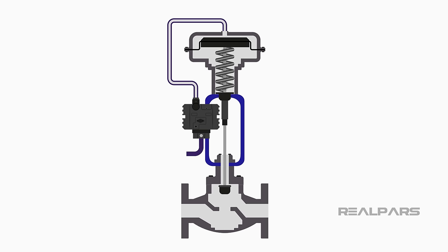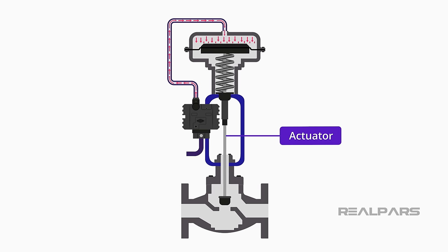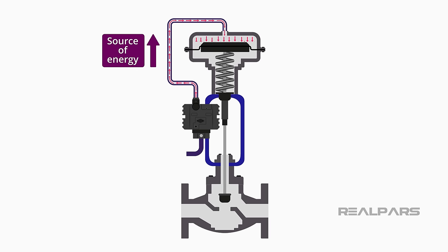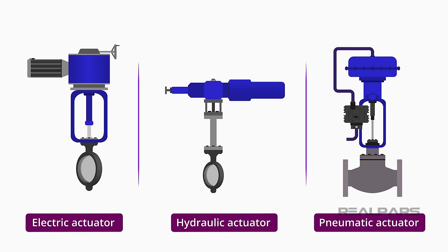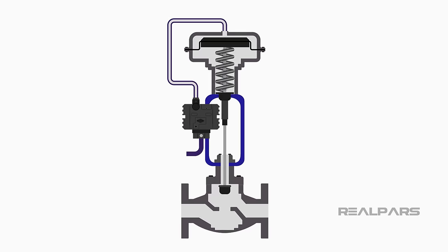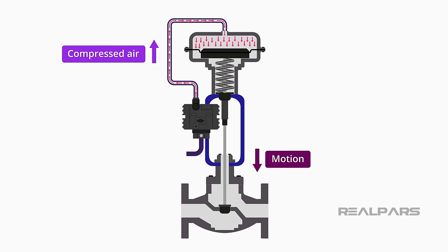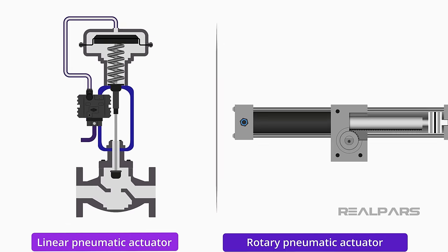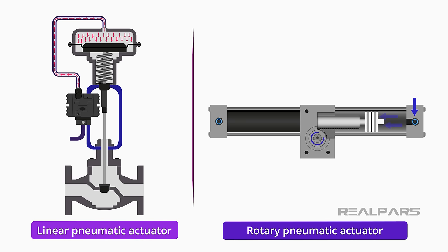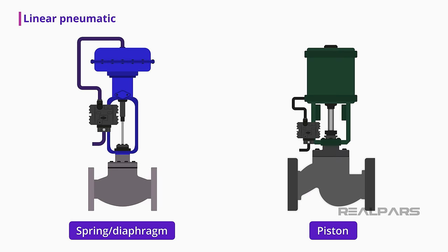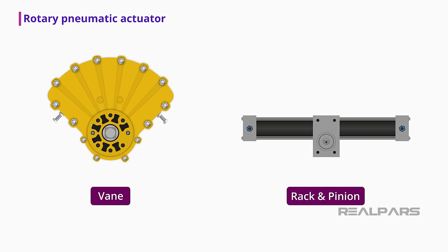Let's review what we've discussed. An actuator is a device that makes something move or operate, and receives a source of energy to do so. The three typical actuator energy sources are pneumatic, electric, and hydraulic. A pneumatic actuator converts energy in the form of compressed air into motion, and can produce either linear or rotary motion. Linear pneumatic actuators include the spring diaphragm style and the piston style. Rotary pneumatic actuators include the rotary vane style and the rack and pinion style.